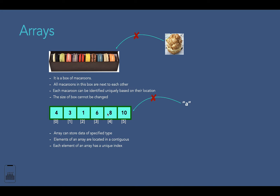The last property of an array is that its size is predefined and cannot be modified. Just like the macaron box is produced for 10 macarons and we cannot fit 11, when we create an array we also define its size upfront. This is the biggest limitation of arrays in Java.